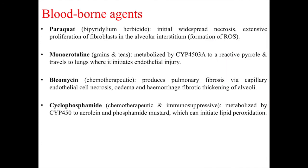Finally, there are a number of chemicals that are not inhaled but are bloodborne and can still cause lung toxicity. Since the lungs receive 100% of cardiac output, any blood containing toxic chemicals can cause damage. These chemicals include paraquat, monocrotaline, bleomycin, and cyclophosphamide. Paraquat, which is a herbicide, leads to initial widespread necrosis, extensive proliferation of fibroblasts in the alveolar interstitium, and the formation of reactive oxygen species, which can damage these cells.